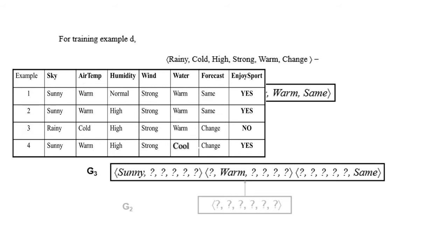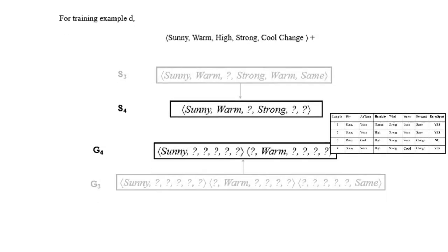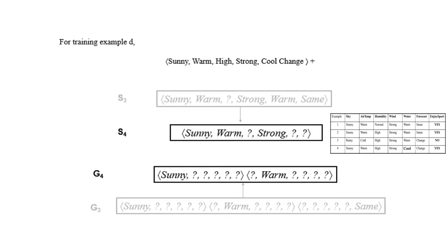For the fourth sample with positive target concept, S4 becomes: sunny, warm, question mark, strong, question mark, question mark. Comparing the fourth training sample with G3, the third hypothesis (with all question marks and 'same' at the end) is inconsistent — it would classify the fourth sample as negative. Since it is actually positive, that hypothesis is eliminated. G4 consists of only two hypotheses.